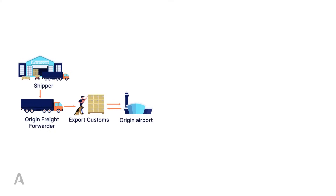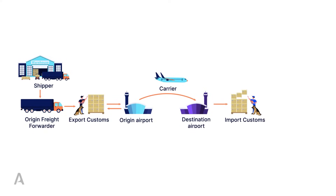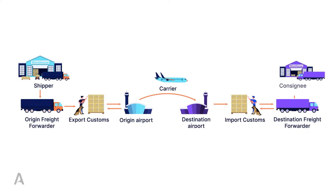The airline then flies the shipment to its destination, possibly via a transit hub or direct, depending on the distance the airline service is involved. Once the shipment arrives, the process is reversed. We have the import process also dealing with customs. Once the shipment is customs cleared, it is then passed to the freight forwarder, who then delivers it to the final consignee.